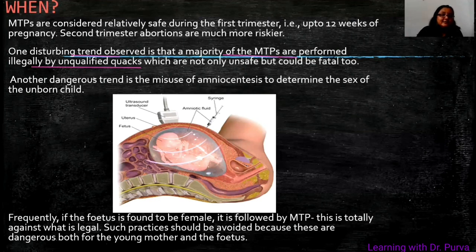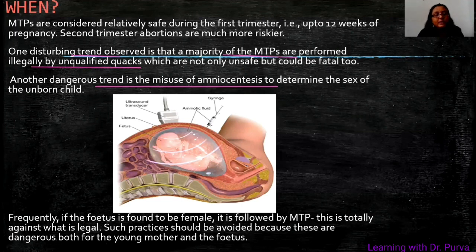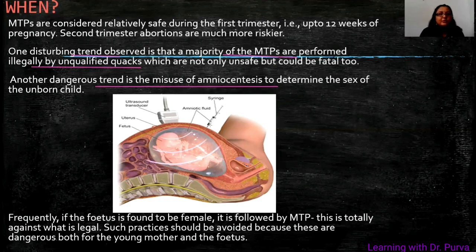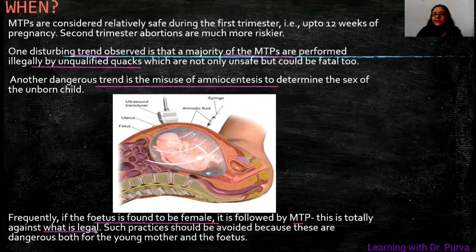Another dangerous trend is the misuse of amniocentesis. Amniocentesis is a technique and method used to check fetal health, but it is misused for sex determination. After sex is determined, if the child is found to be female, female feticide cases result — this is a disturbing trend observed during MTP. If the fetus is found to be female, it is followed by MTP, and that is totally against what is legal. As discussed, using sex determination as the basis for MTP is a misuse.